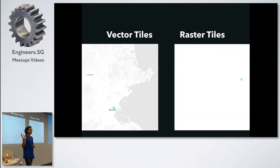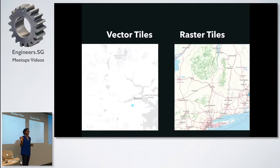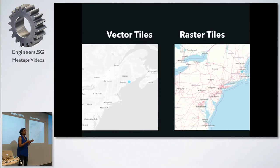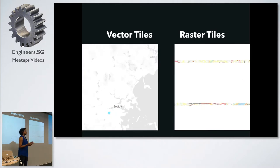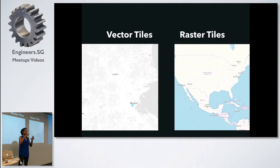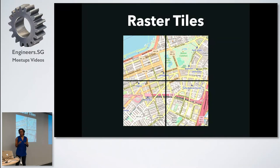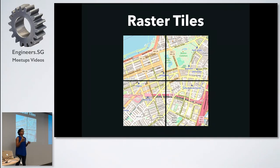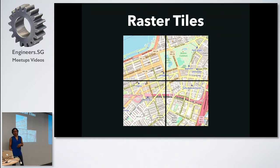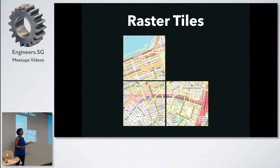Have you worked with image graphics on the web before — like SVG and PNG? It's the same concept. Vector is optimized for scale, so as you zoom in and out it's very smooth. Raster is like a static image — as you zoom in and out, you're requesting tiles as you go. You can think of a raster tile like a quilt of squares. Each tile is a PNG with data embedded — roads, streets, parks, lakes. If you remove one tile, the map is missing something.